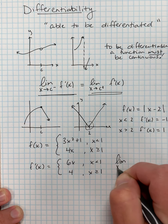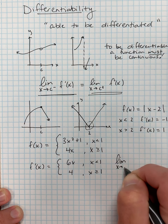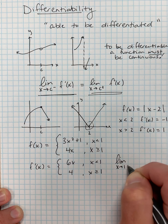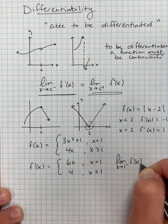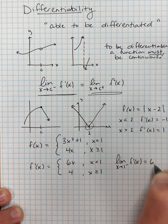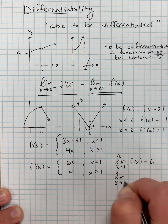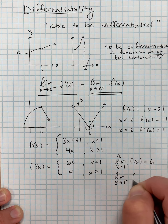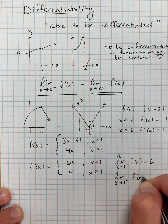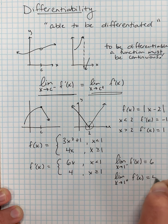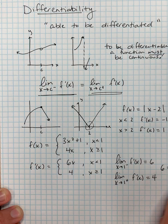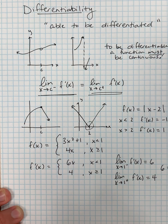More specifically, the limit as x approaches 1 from the left of f prime of x equals 6, but the limit as x approaches 1 from the right of f prime of x equals 4. Since 6 does not equal 4, this function is not differentiable at x equals 1.